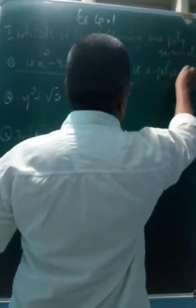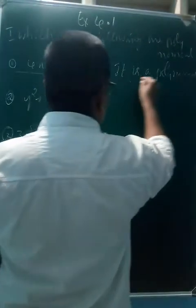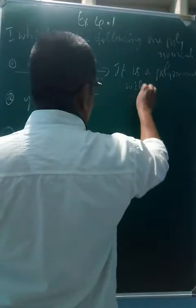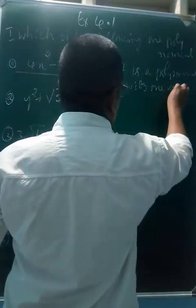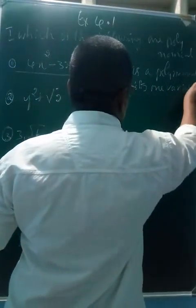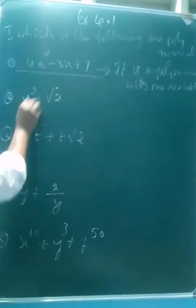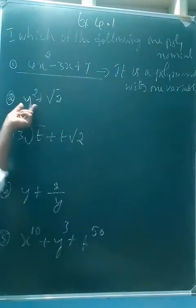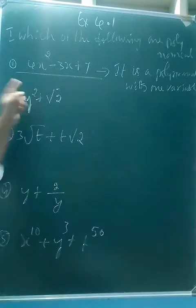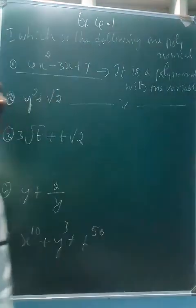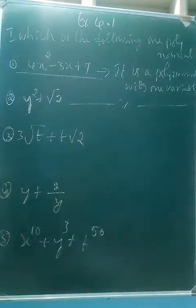It is a polynomial with how many variables? One variable. Now the second one: y² + √2. √2 is a constant — let it be. y² has power 2. Again it is the same thing — it is a polynomial with one variable.